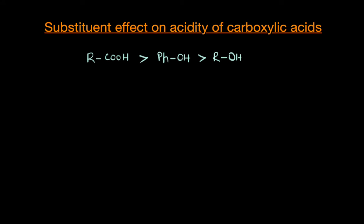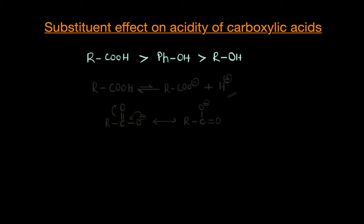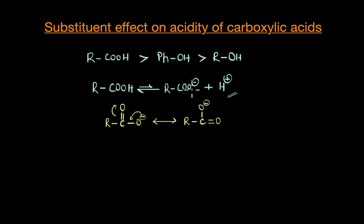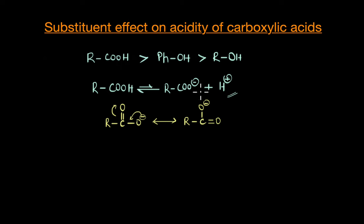From the previous video we saw that carboxylic acids are much more acidic compared to phenols or alcohols, and this acidic strength comes from the stability of its conjugate base. Any substituent that stabilizes this negatively charged conjugate base through inductive effect or resonance would make the base more stable. As a result, the equilibrium shifts more towards the products, generating more H+ ions — in other words, the acidic strength increases.